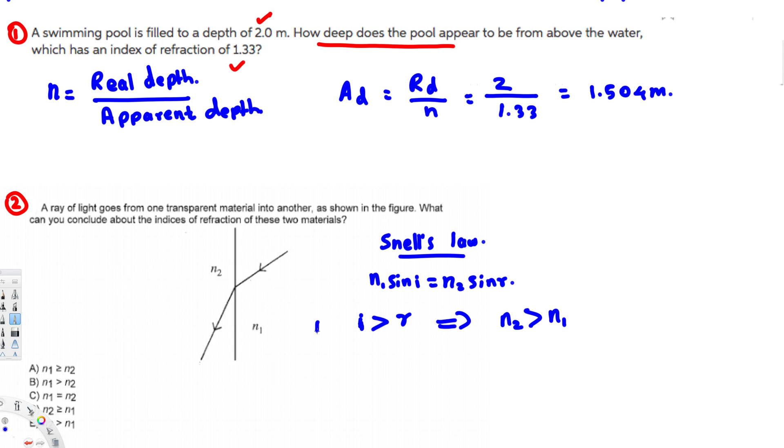Now the second condition is: if the refractive angle is bigger than the incident angle, then n1 should be greater than n2.